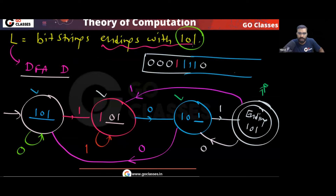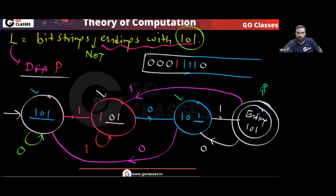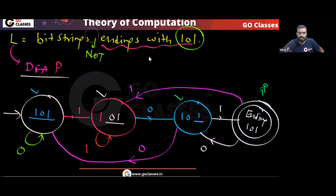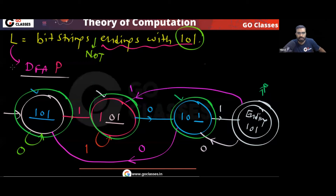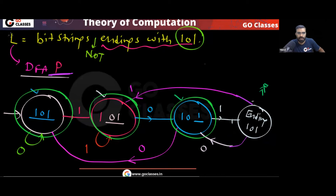This is the DFA for ending with 101. To create DFA P for not ending with 101, we make all final states non-final and all non-final states final. So states A, B, C become final and state D becomes non-final. This new DFA P accepts the language of strings not ending with 101.